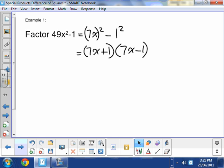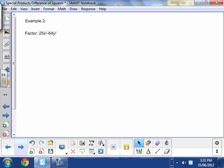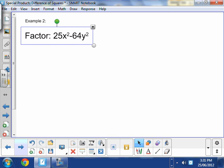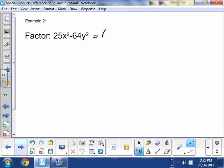Okay, so we said practice makes perfect. How about we do another one? 25x squared minus 64y squared. Can I write this as a difference of 2 squares?